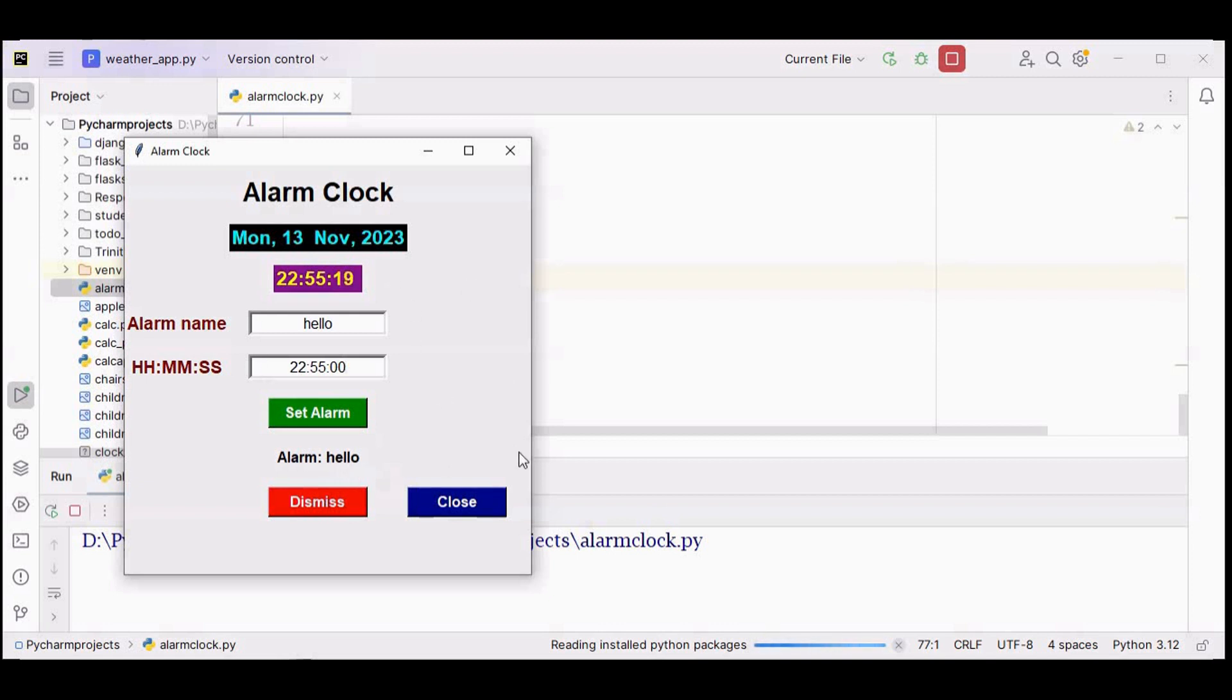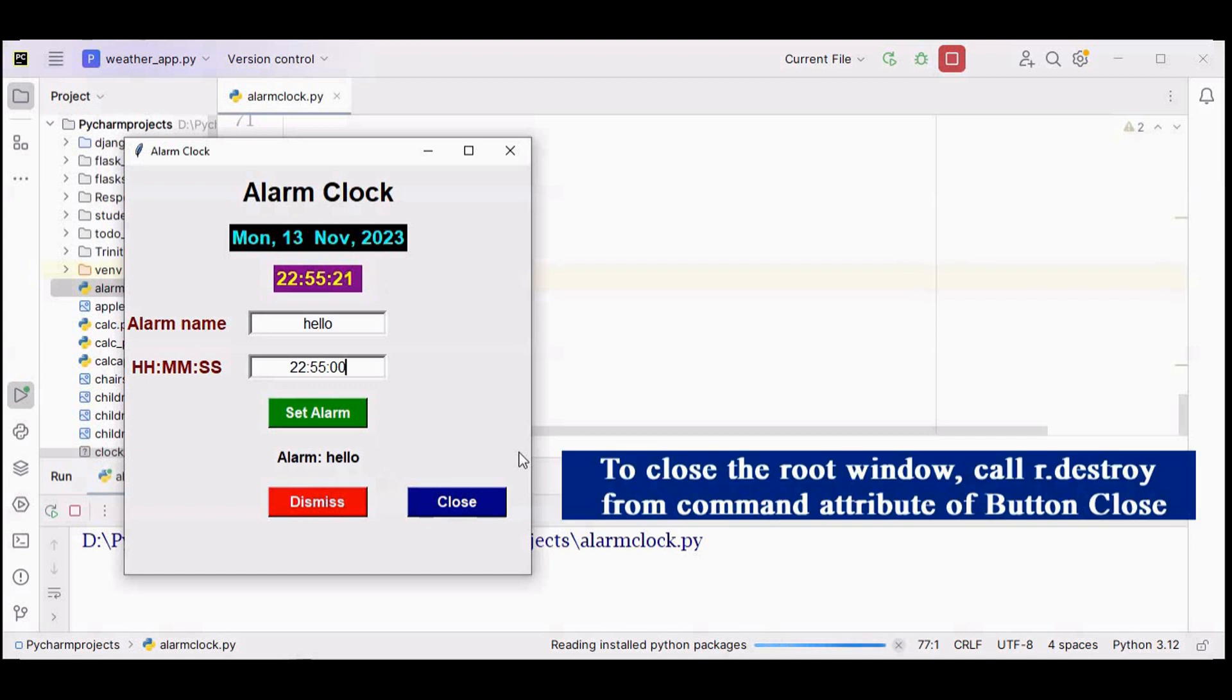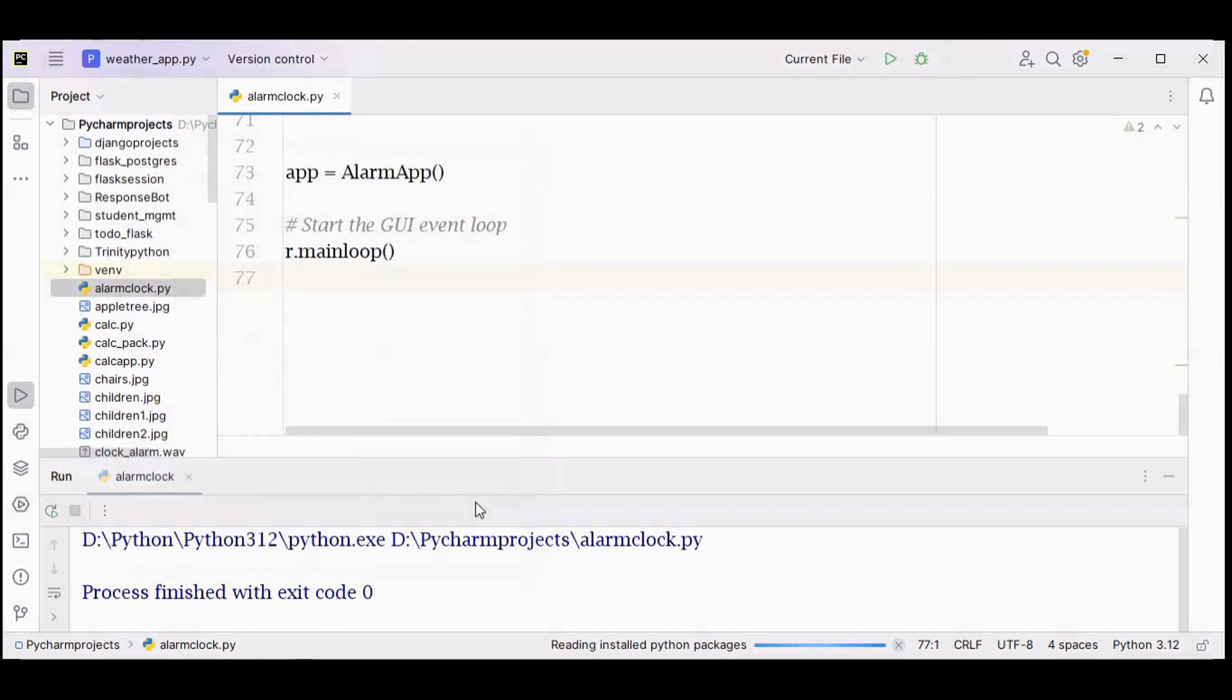This is how a simple alarm clock has been built using Python. You can also close this application using the close button. Thanks for watching. If you like this video, kindly share and subscribe.